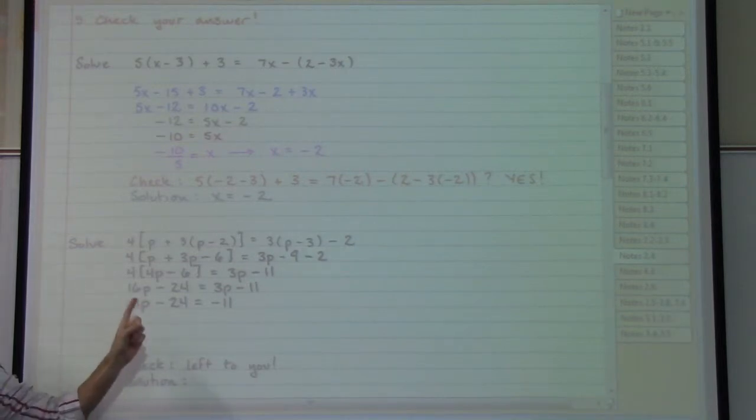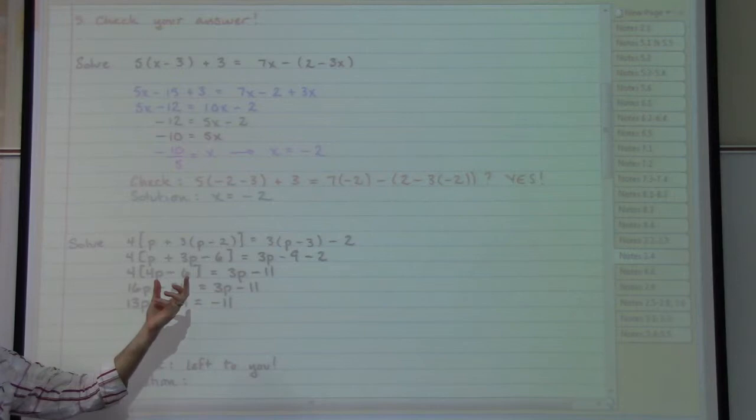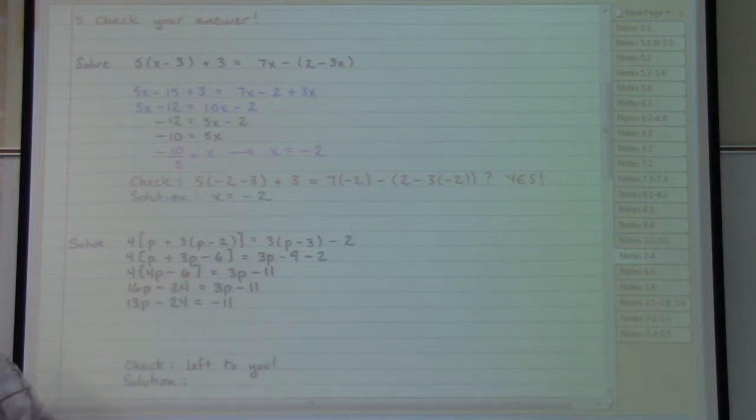We still have the 13 and the 24 connected with the letter p so we want to move those two out of the way. The next one that would be best to move is the 24. The opposite of subtraction is addition. Add 24 on both sides. Well now in order to get the p by itself we just need to divide on both sides by 13.